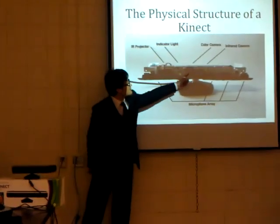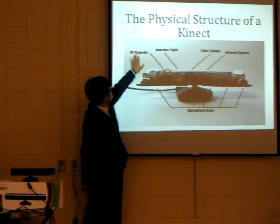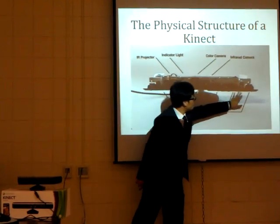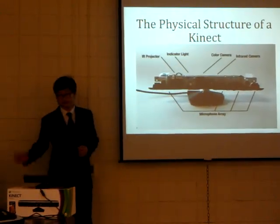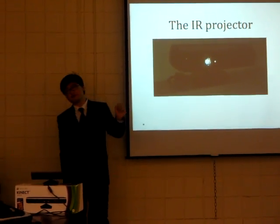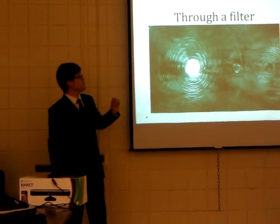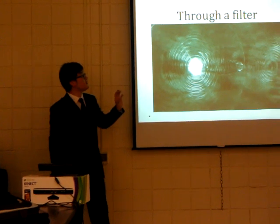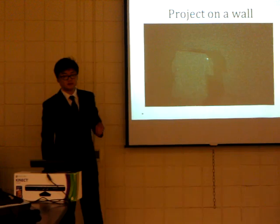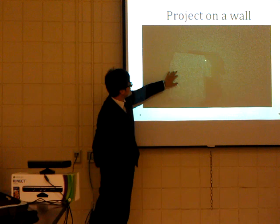In the center, there is a color camera. On the left, there is an infrared projector and an infrared camera. On the bottom, there are four microphones. The infrared projector emits infrared rays. Because infrared rays are invisible to human beings, under the assistance of a filter we can see them projected as dots on the wall.